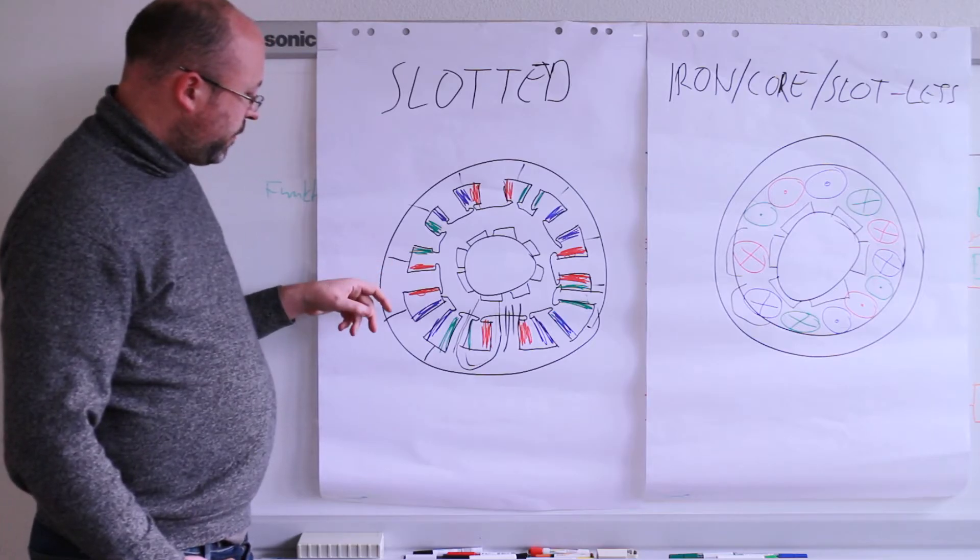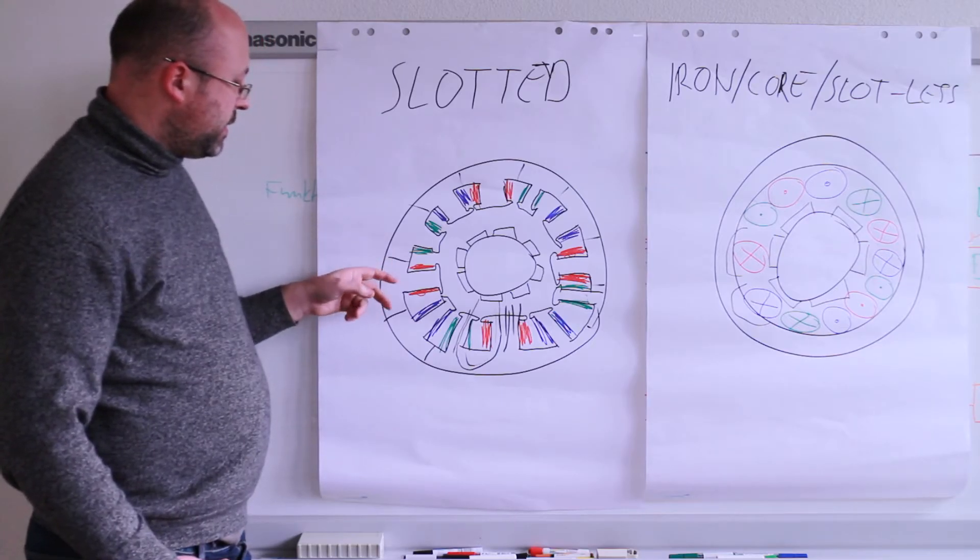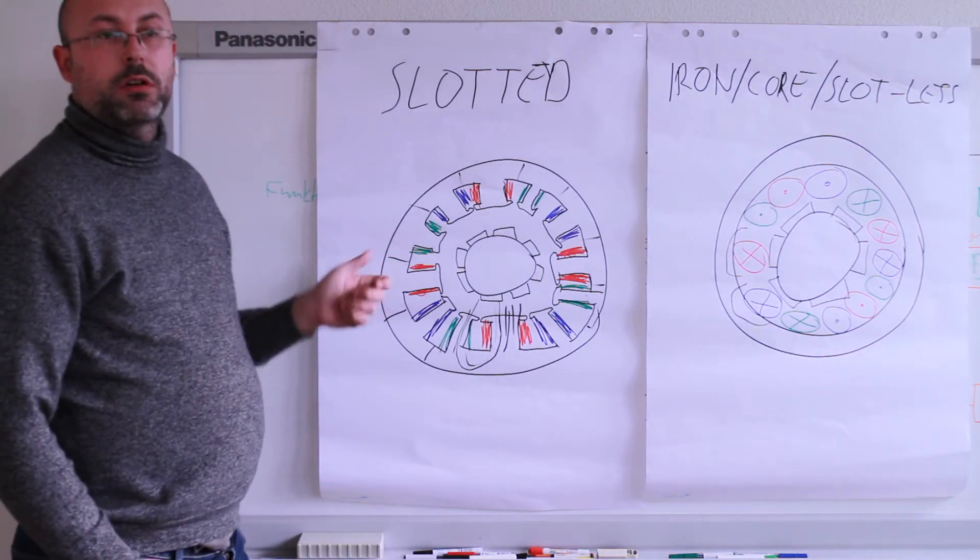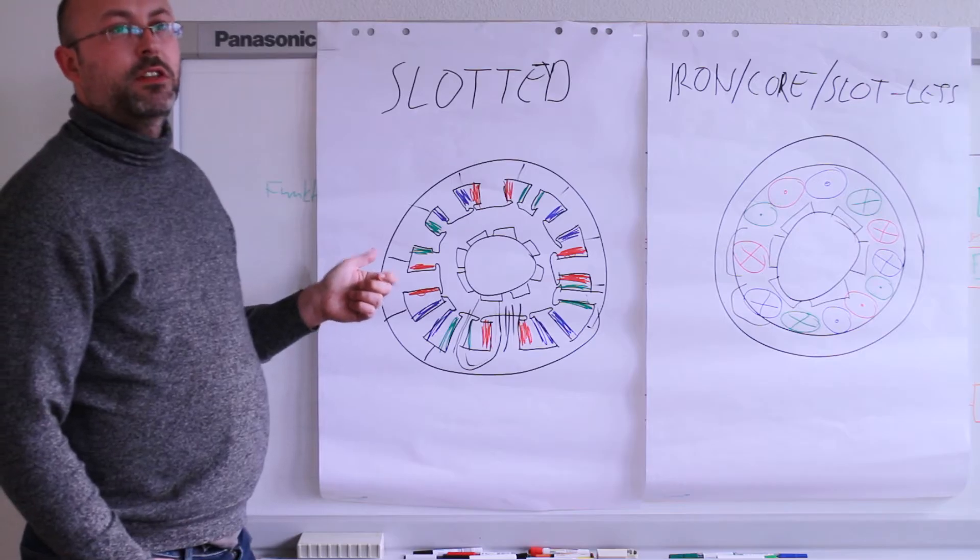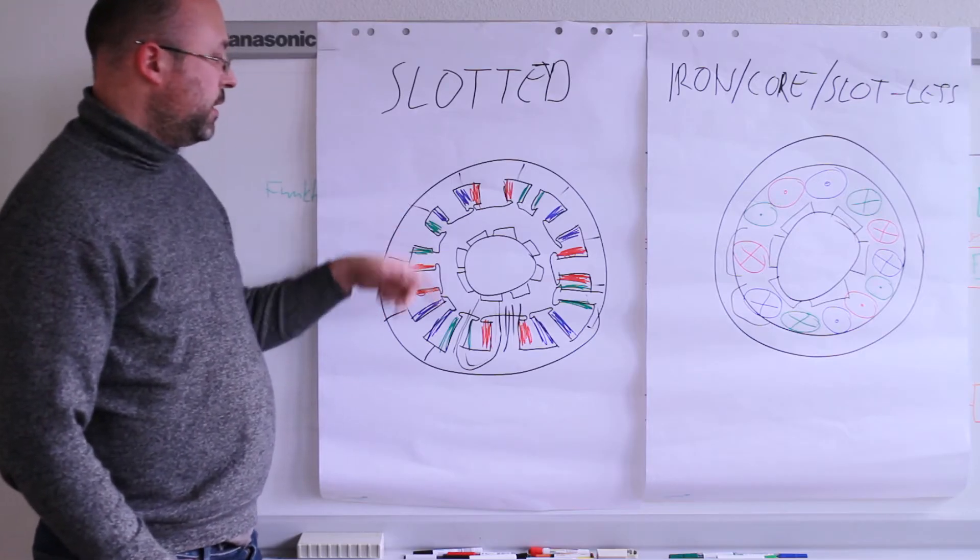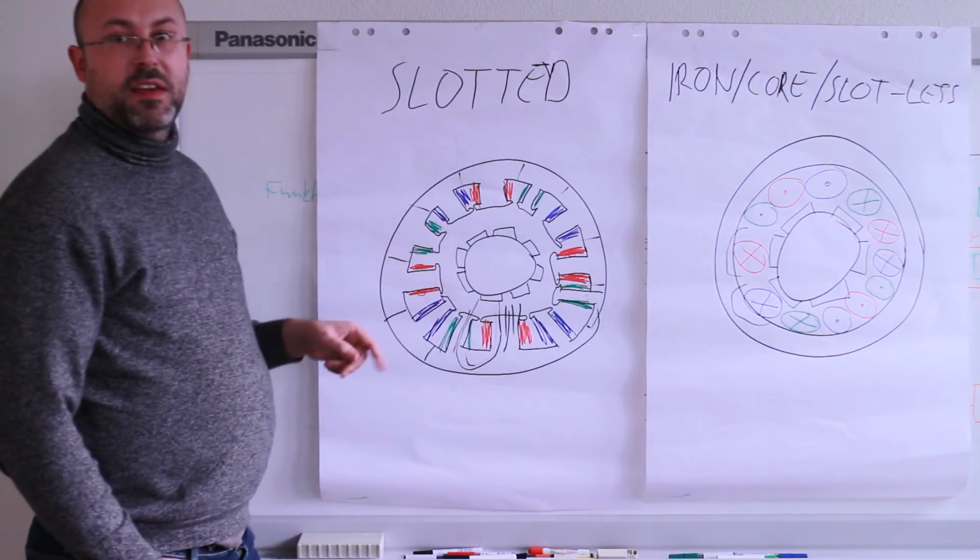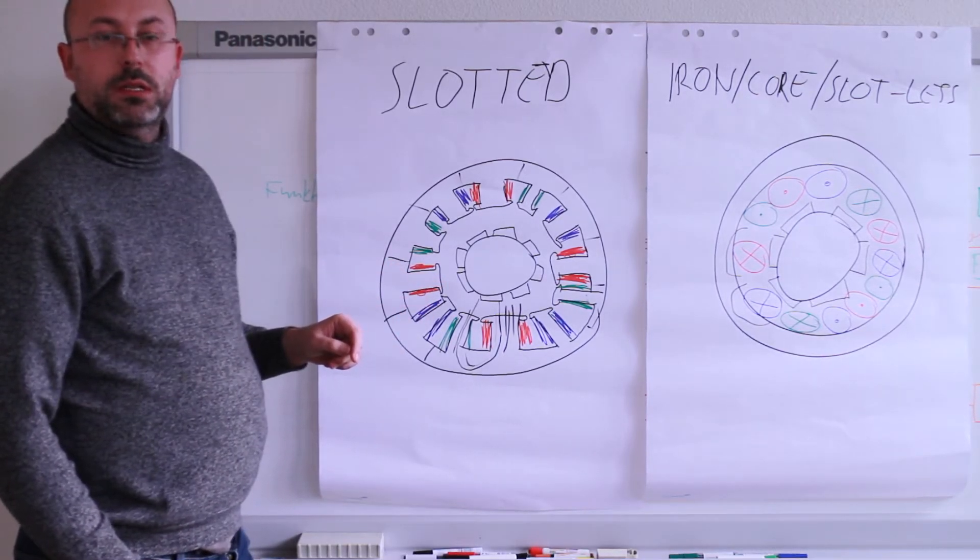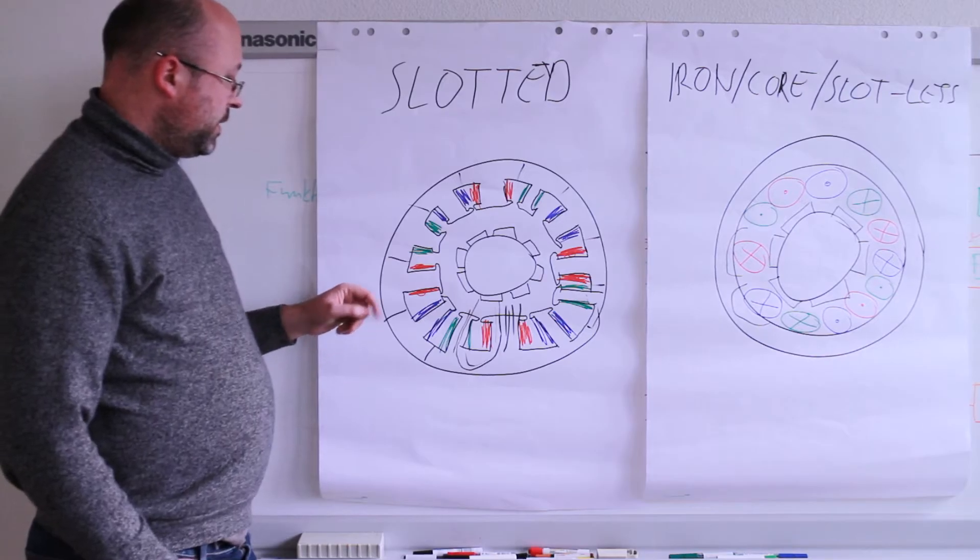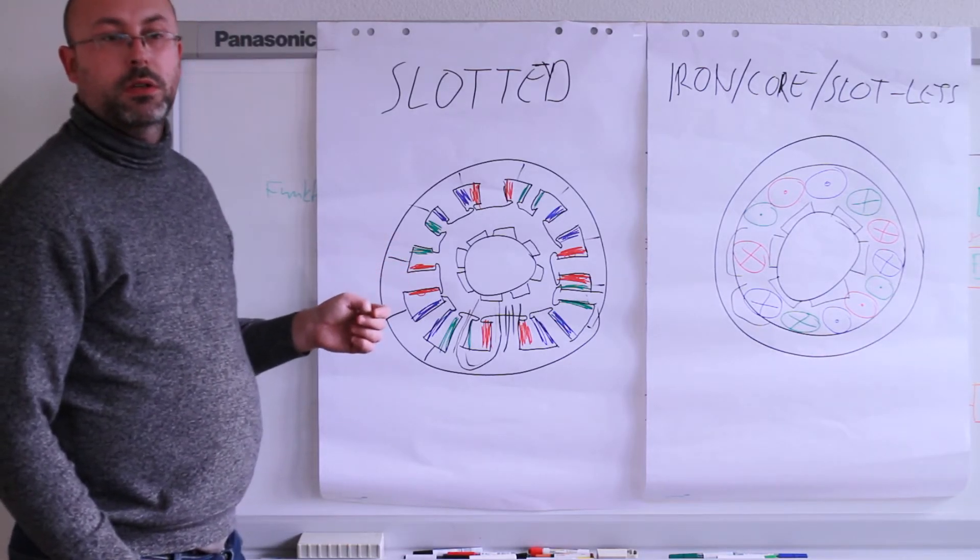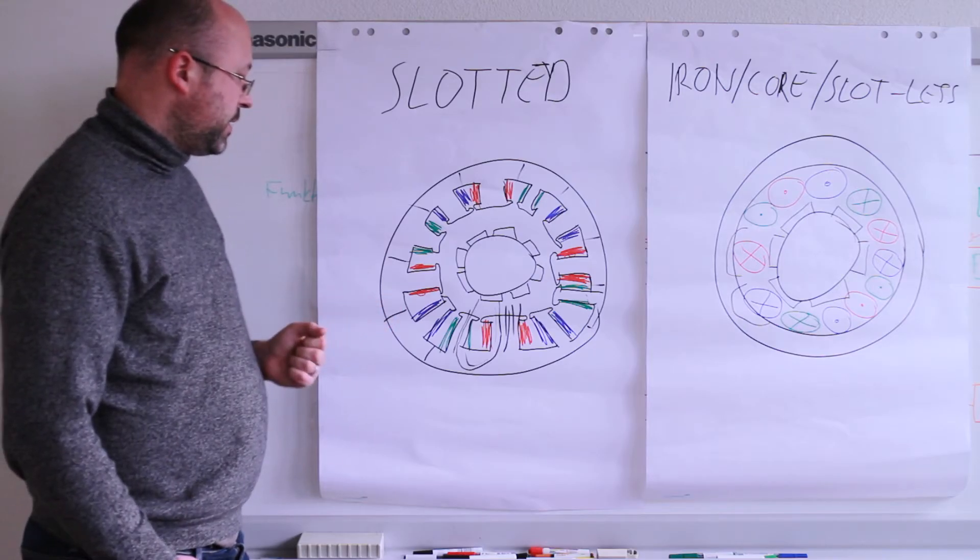If we go for a slotted segmented stator, we will have for a 60mm motor, if we have 0.5mm sheet thickness and 12 poles, we end up already having thousands of these small sheet parts. Very quickly we end up at the point where it makes sense to go for punching instead of laser cutting.